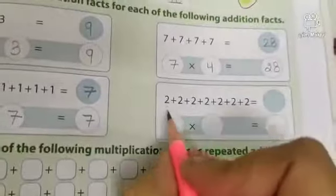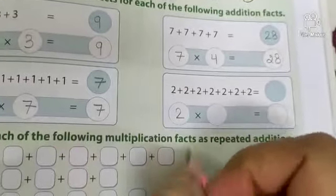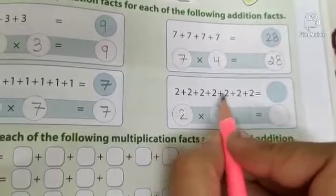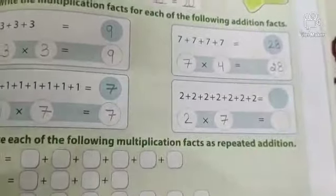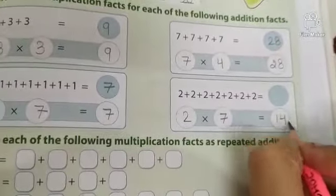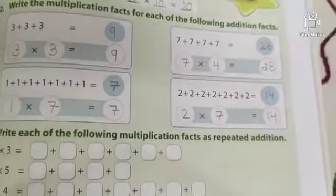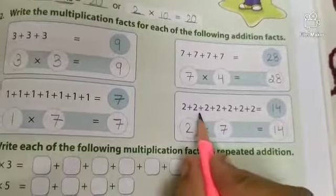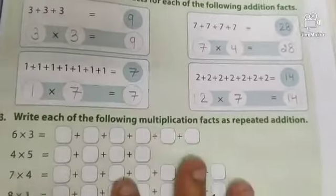Now this part. Which number is this? 2. Now how many times? 1, 2, 3, 4, 5, 6, 7. So class, 2 sevens are 14. Very good. So write 14 here. So 7 times 2 is equal to 14, or 2 sevens are 14. Okay?